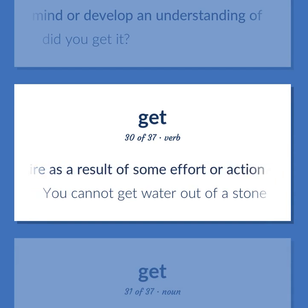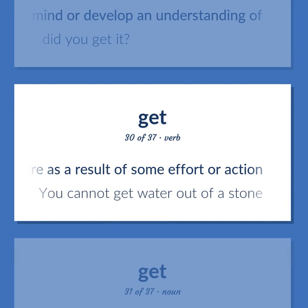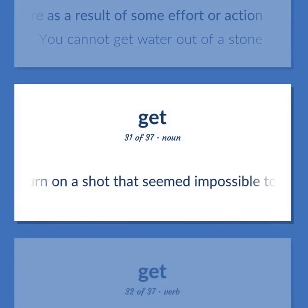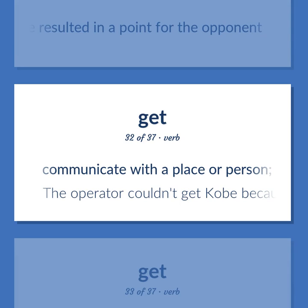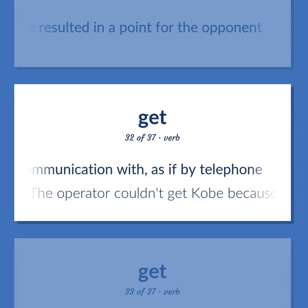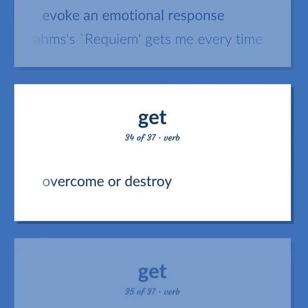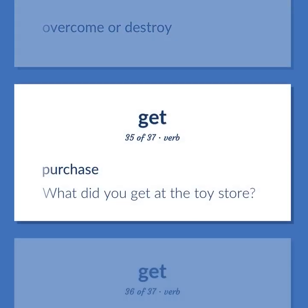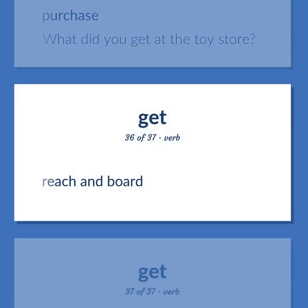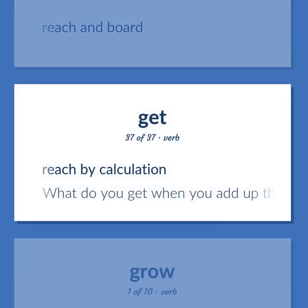Get: Acquire as a result of some effort or action — you cannot get water out of a stone. A return on a shot that seemed impossible to reach, which would normally have resulted in a point for the opponent. Communicate with a place or person — the operator couldn't get Kobe because of the earthquake. Evoke an emotional response — Brahms's Requiem gets me every time. Overcome or destroy. Purchase — what did you get at the toy store? Reach and board. Reach by calculation — what do you get when you add up these numbers?